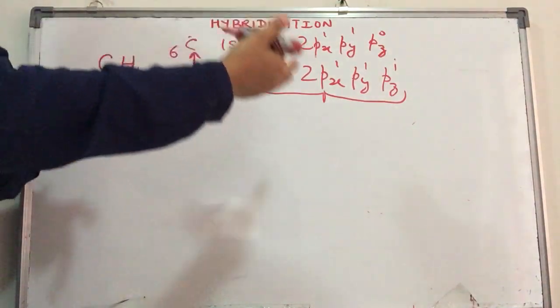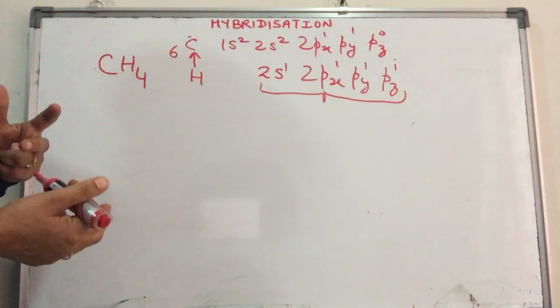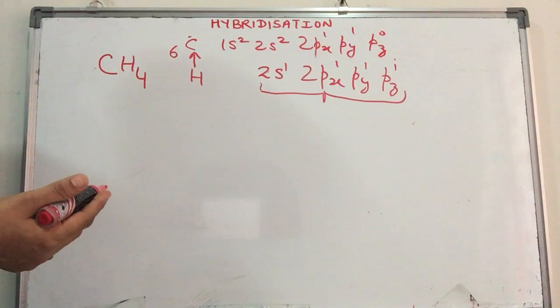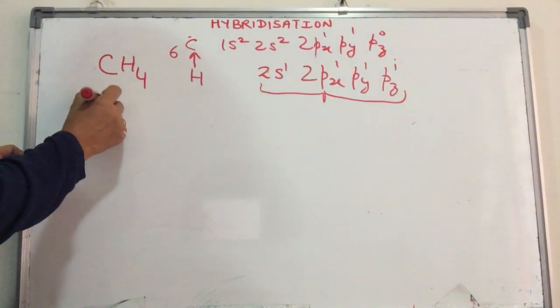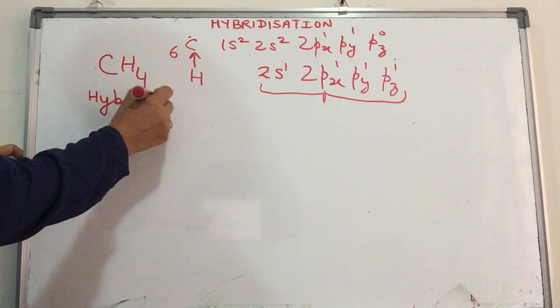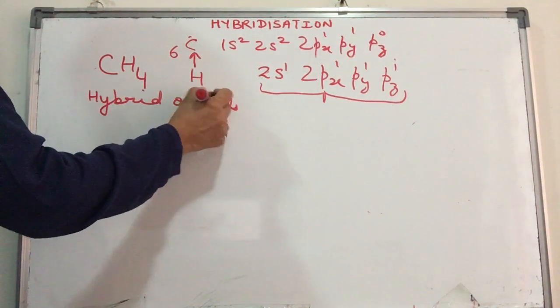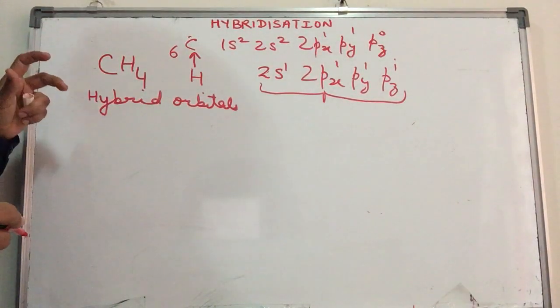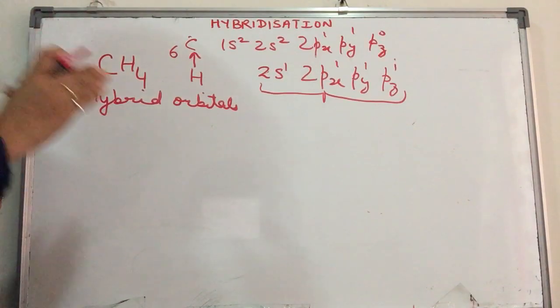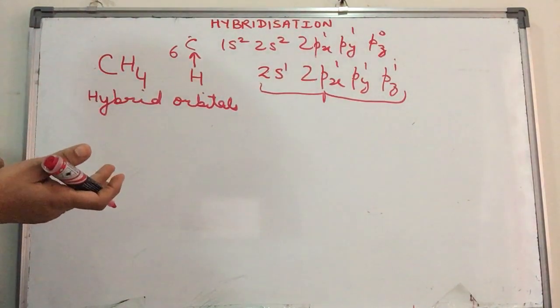These four atomic orbitals come together and redistribute their energy. S will give some energy to P, they redistribute. What we have is a new set of orbitals called hybrid orbitals. These hybrid orbitals belong to the molecule and will only be formed when bonding is about to happen.